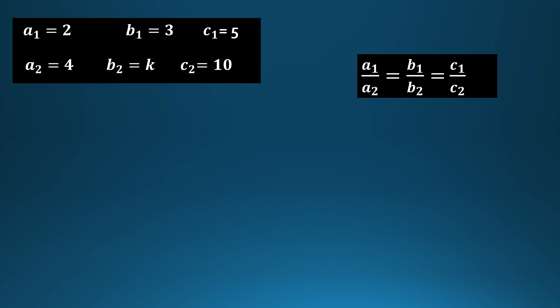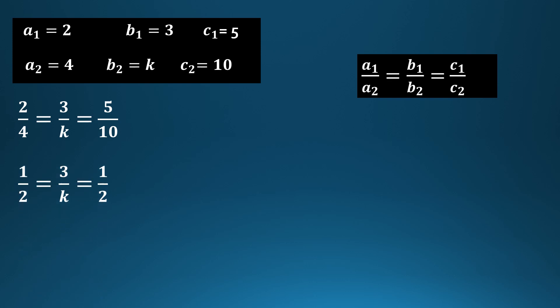Applying the condition for infinitely many solutions: a1/a2 = b1/b2 = c1/c2, we substitute: 2/4 = 3/k = 5/10. Simplifying, 1/2 = 3/k = 1/2. So 3/k = 1/2. Cross-multiplying: k = 3 × 2 = 6. Therefore k = 6.